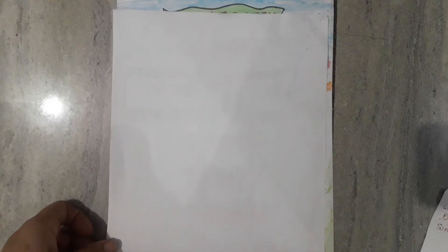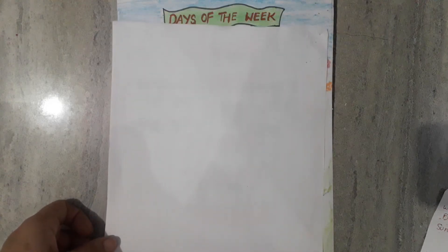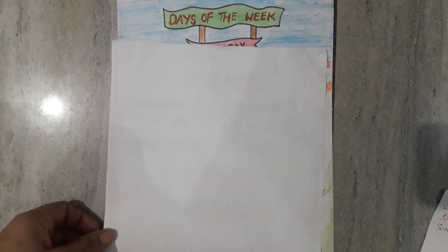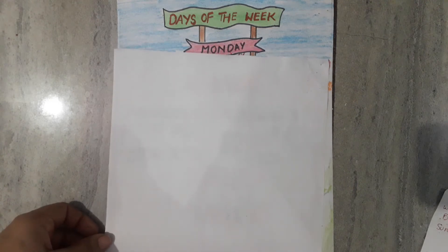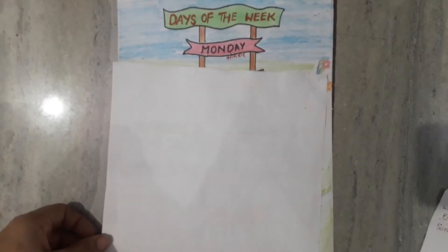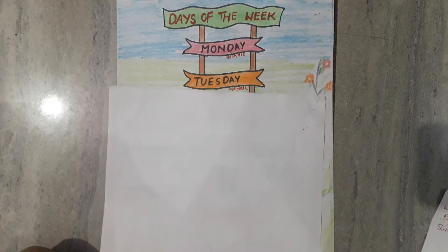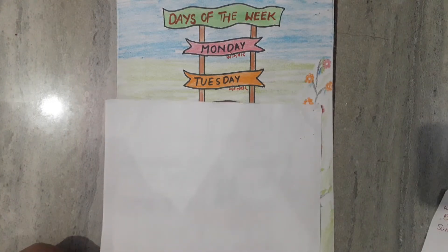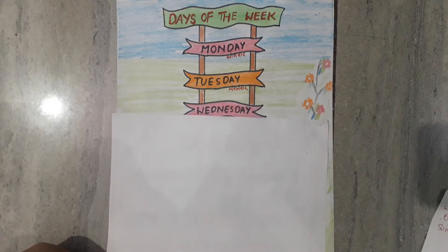Every week has seven days, starting from Sunday, Monday and Tuesday. Did you brush your teeth today, Wednesday and Thursday? Did you wash your face today, Friday and Saturday? Eat your meals every day.